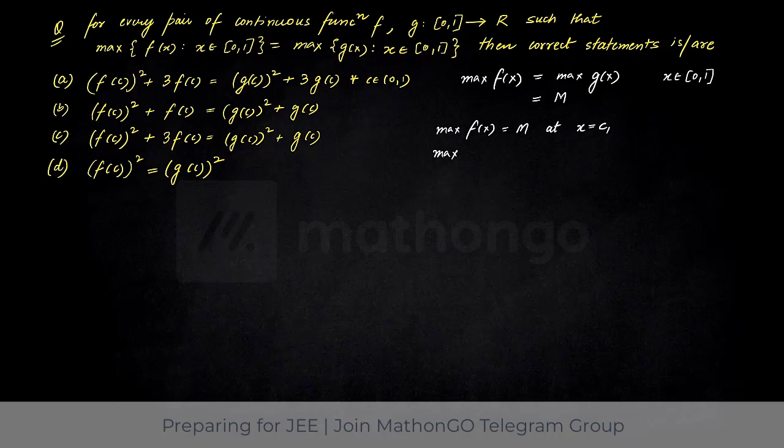Similarly, the max value of g(x) is equal to capital M because they are equal at x equal to let's say some other value c2. And we can say that c1 and c2 both basically belong to [0,1] which we are not sure what their values are, but there will be some values from 0 to 1. Right?